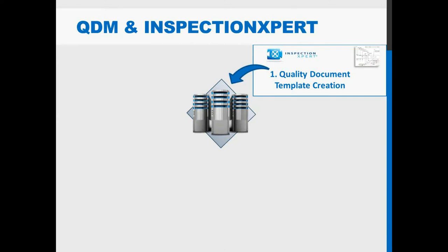In this Stigler workflow, you begin in Inspection Expert where you're going to author your template. You're actually creating your form here that you're going to be using your selected data to populate later on. Once you create a template, you can reuse that template over and over again for different data sets. You can also take those finalized reports and attach them onto your parts in QDM, so you can create a history of different quality documents related to your parts.